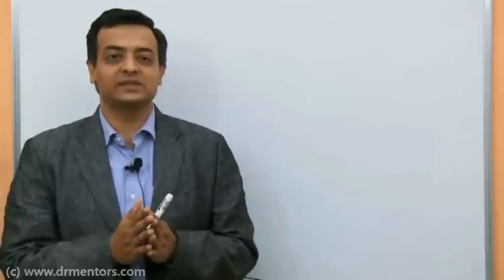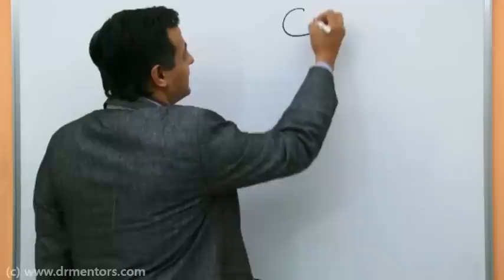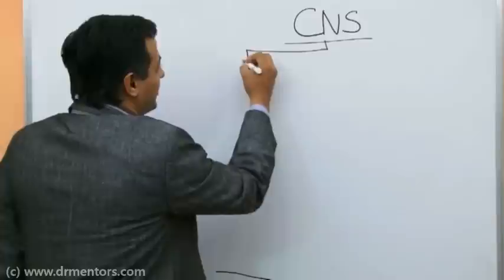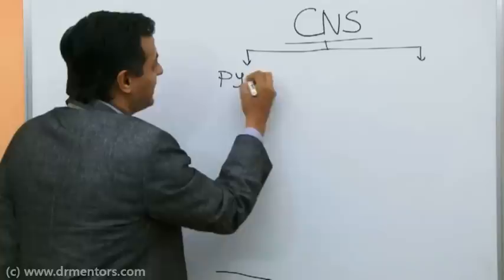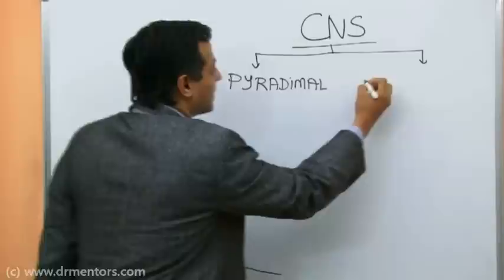Most people say that by the time we study the cortex we have forgotten the spinal cord, and when we study the spinal cord we forget neuropathy. So today we are going to start with the basic classification of CNS disorders, broadly categorizing CNS into two types: the pyramidal system and the extrapyramidal system.